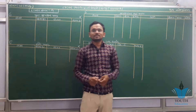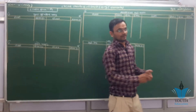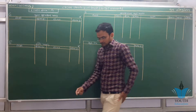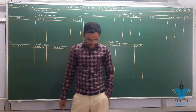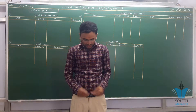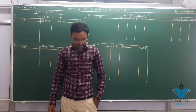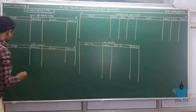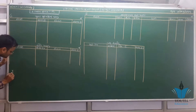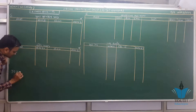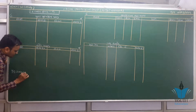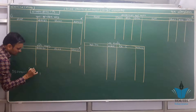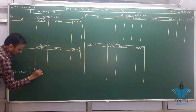નમસ્કાર મિત્રો, આ વિડીઓમાં આપનું સ્વાગત છે. આજે આપણે જોઈશું ચેપ્ટર નંબર 6 ના દાખલા. ચીરાગ, જીગર, કેશવ ત્રણ ભાગીદાર છે, જેમનું પ્રમાણ 3:2:1 છે. નફાનુકસાનમાં ભાગ લેતા ભાગીદારો છે.